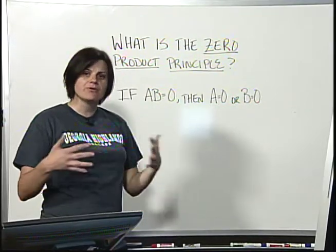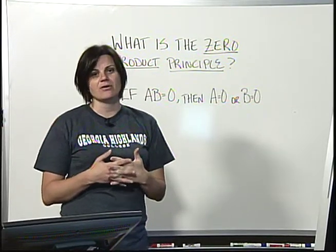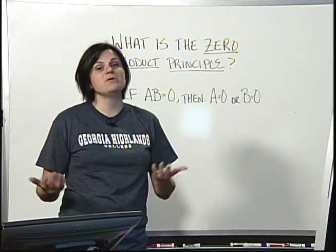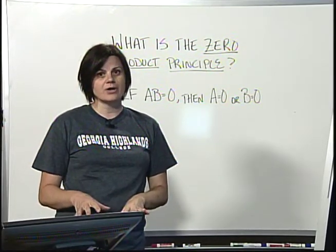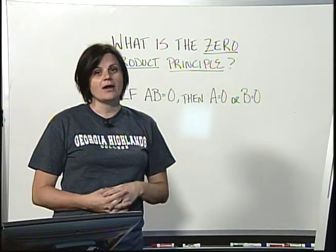So simply stated, if you're multiplying two things together that make zero, then you had to be multiplying with zero. So let's take a closer look at the property itself and a couple of examples.